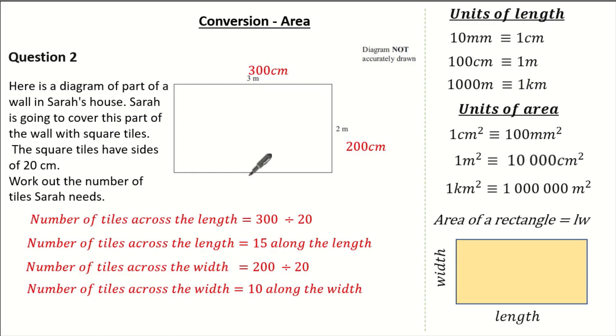Well, if I can fit 15 square tiles along the length and 10 square tiles along the width, therefore I can work out the total number of tiles needed to be 150 square tiles because it's 15 times our 10.